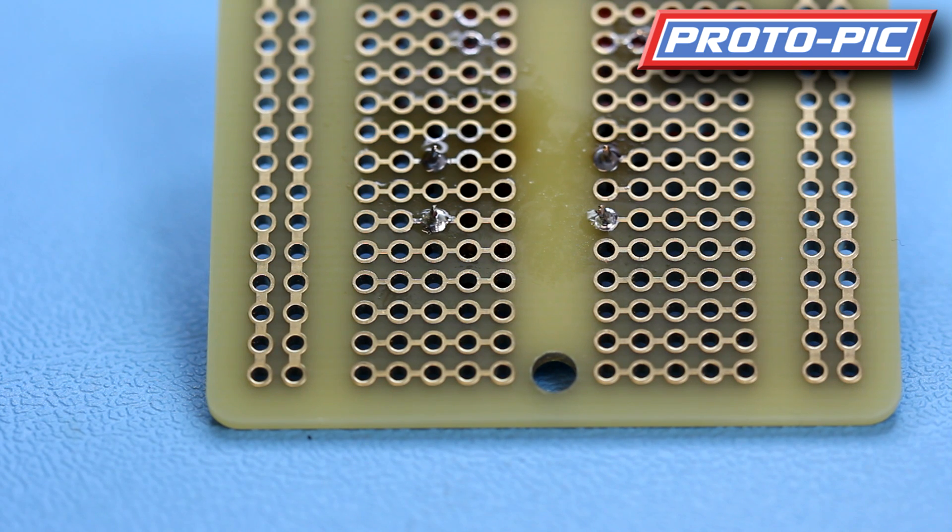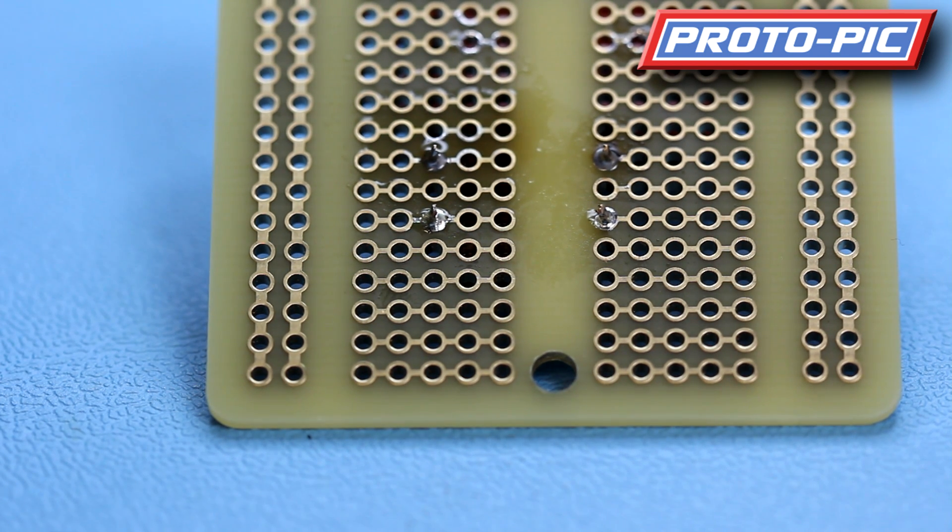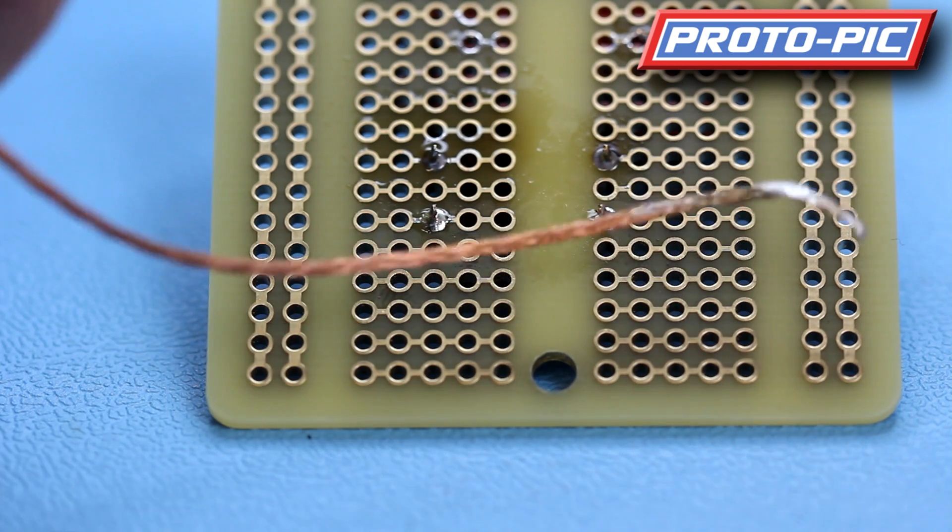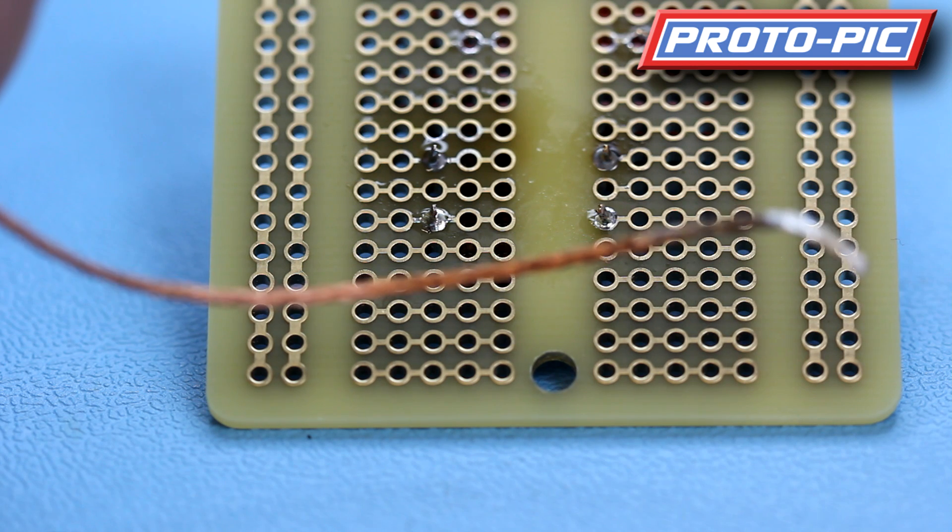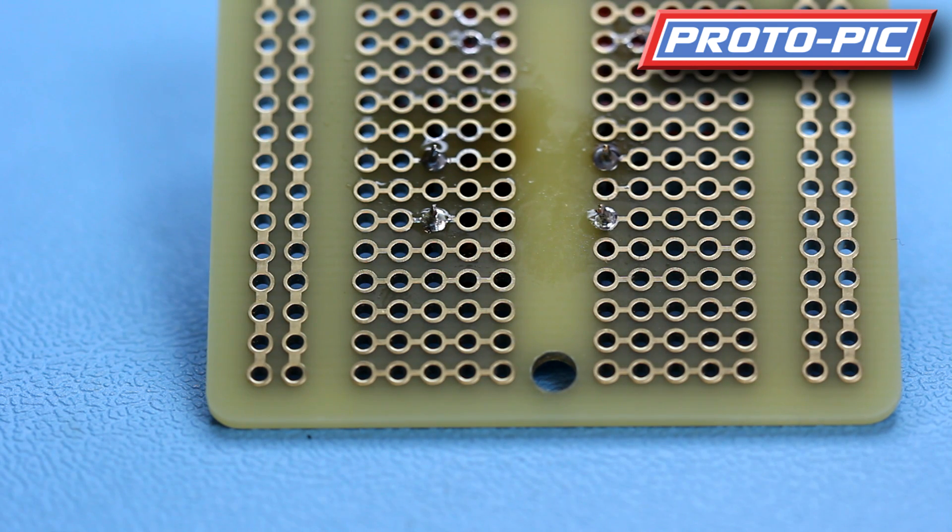Any more than that, you need to remove the solder, and generally you would use something like solder wick, which again we sell on the website, there's some in the division there. You would hold this against the solder blob, heat up the wick with your soldering iron, and it does exactly what it says, it wicks the solder away, so it absorbs it. And then you just remake your joint with fresh solder.